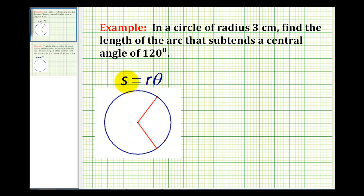Looking at this circle here, the radius is three centimeters, and the central angle here would be 120 degrees. We want to determine the length of this arc here.